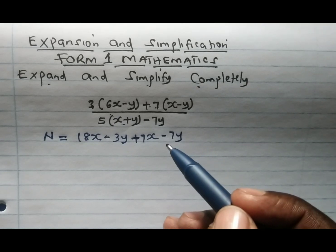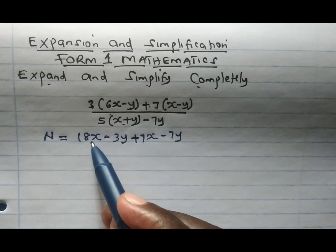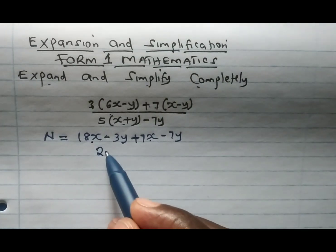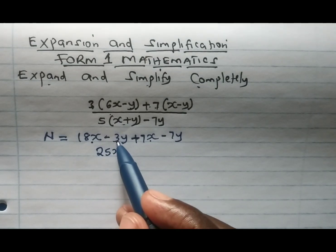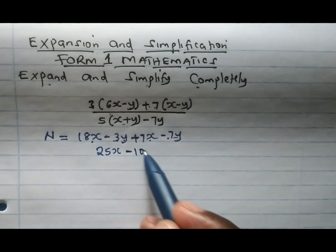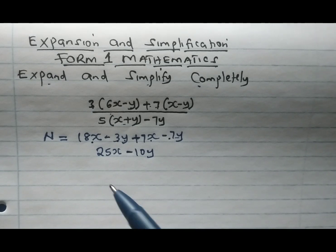Collecting the like terms, we have 18x plus 7x gives 25x, then minus 3y minus 7y gives minus 10y. That is our numerator.